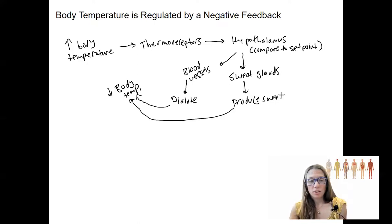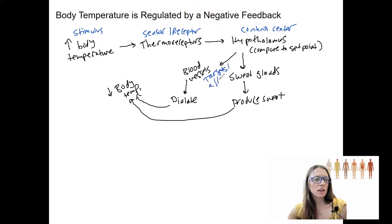These two responses are going to act to decrease body temperature. So if you feel up for it, pause the video and label these things yourself, the components that I'm going to do right now. I already said what they were as I was going. So this is the stimulus, sensor or receptor, control center or integrator. These are both targets or effectors. These are the responses. And then this is the outcome. So here is our negative feedback that acts to counteract the original stimulus.